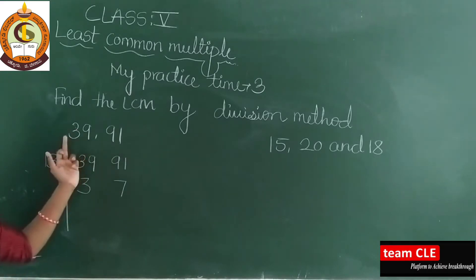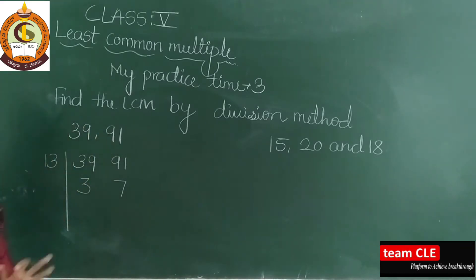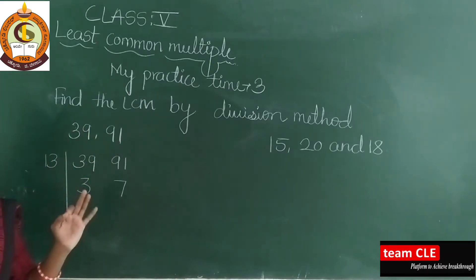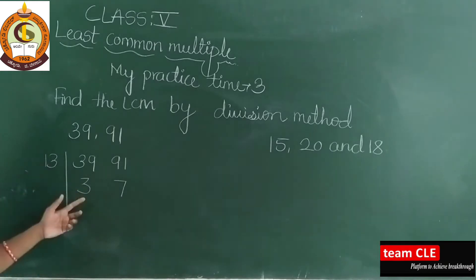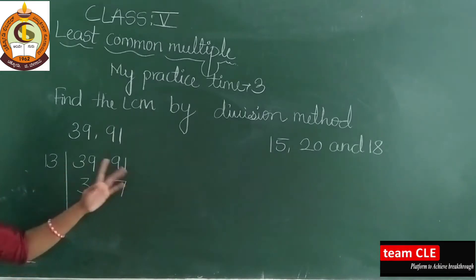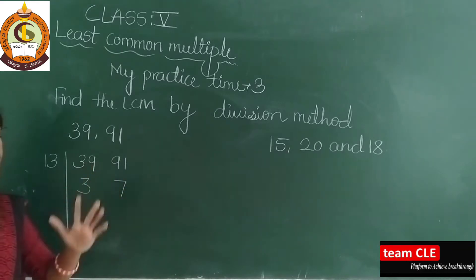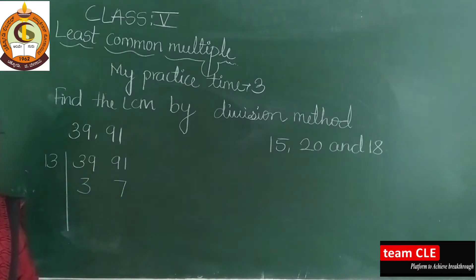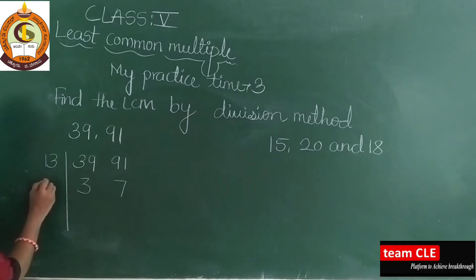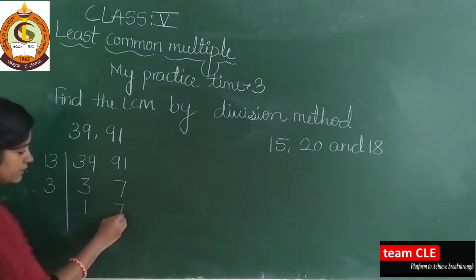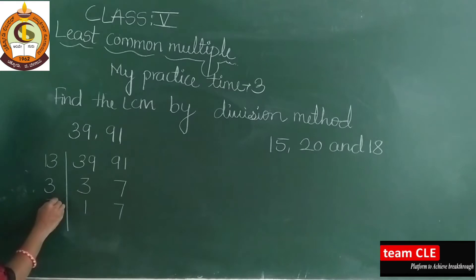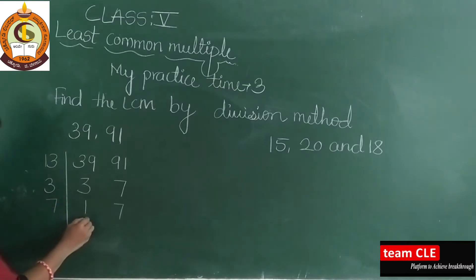First you need to check which table both numbers belong to. Here, 13 threes are 39 and 13 sevens are 91. Now just see: 3 and 7 — both are not in any other common table. So I will take the smaller digit first. 3 ones are 3, and 7 as it is — 7 ones are 7.